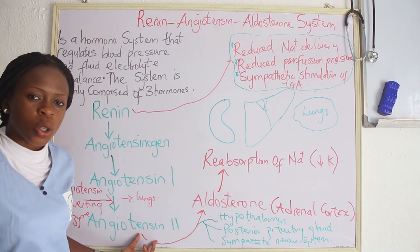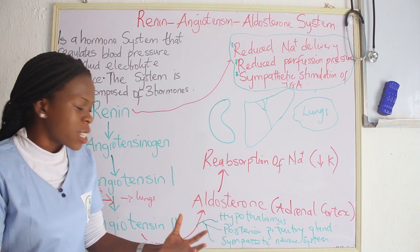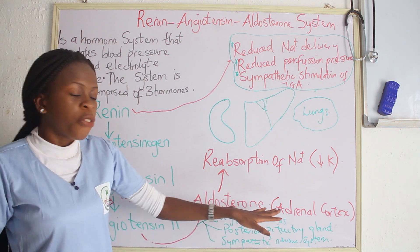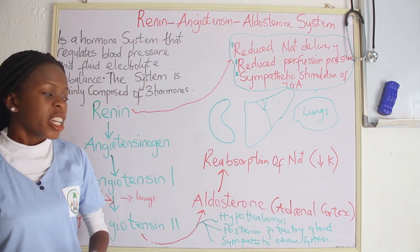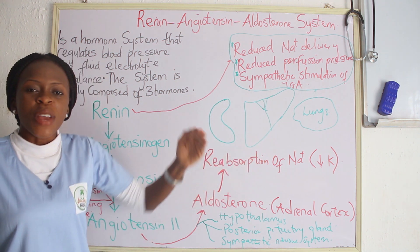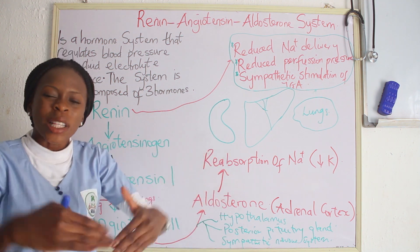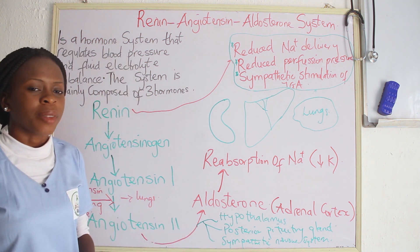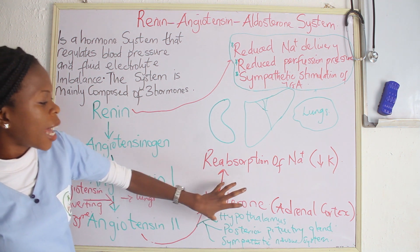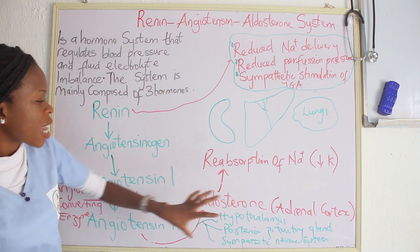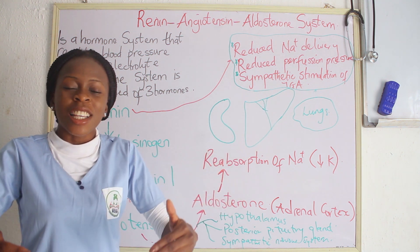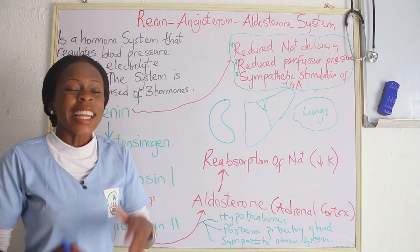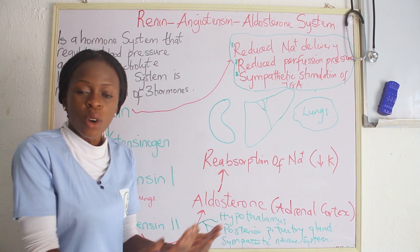Angiotensin 2 stimulates the release of Aldosterone from the adrenal cortex. When Aldosterone is released, it leads to the reabsorption of sodium back into the bloodstream. As sodium is reabsorbed, water follows alongside. This increased fluid volume results in increased blood pressure — that is the role the RAS system plays in the regulation of blood pressure.